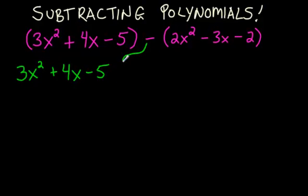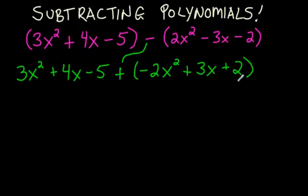But with this one, we're going to put a plus sign. So we're going to put a plus sign right there. And instead of writing 2x squared, we're going to do the opposite of 2x squared, which is negative 2x squared. Instead of negative 3, we're going to put a positive 3. Instead of negative 2, positive 2.